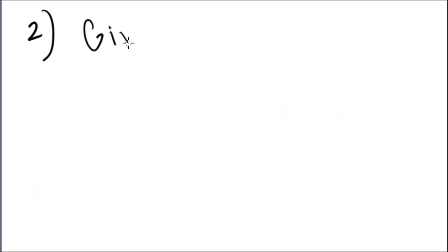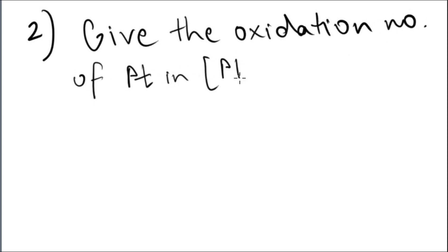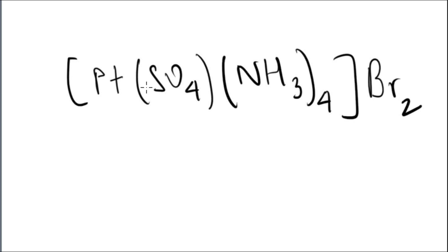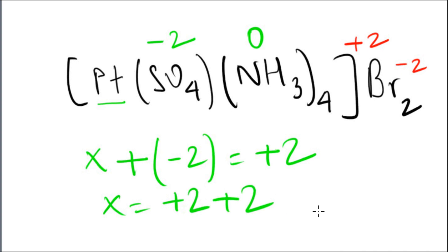On to the next question. You have to give me the oxidation number of the metal, which is platinum, in this coordination compound. You have platinum with sulfate and ammonia and bromine in the outer sphere. First we need to find the complex charge in order to find the CMI charge. If bromine is minus one, two bromine molecules will be minus two, and the complex sign will be plus two. Now we know ammonia is neutral, zero. We know sulfate is minus two. So using algebra, platinum is going to be plus two with another plus two from the sulfate, giving us plus four.